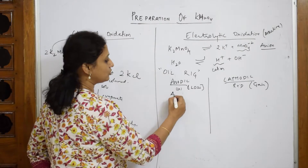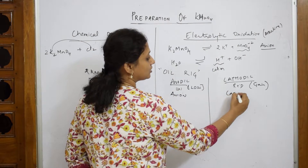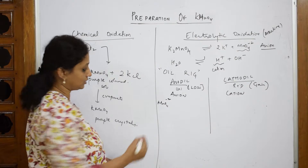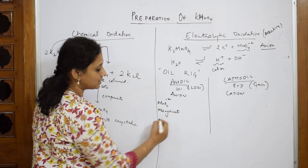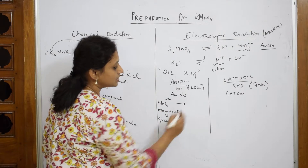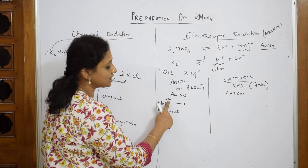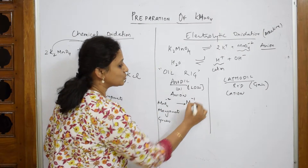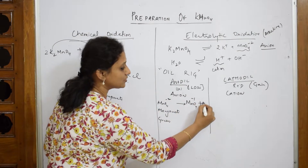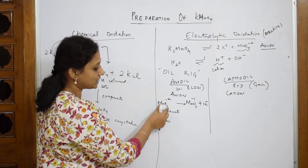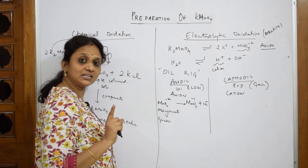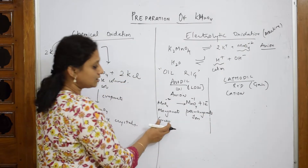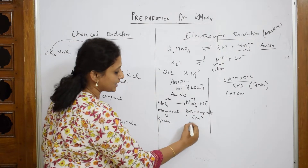In the anodic reaction, the anion MnO4²⁻ (the manganate ion, green in color) comes to the anode and loses one electron, converting to MnO4⁻ — the permanganate ion. MnO4²⁻ is manganate (green color); MnO4⁻ is permanganate (purple color).